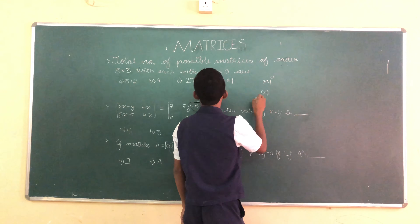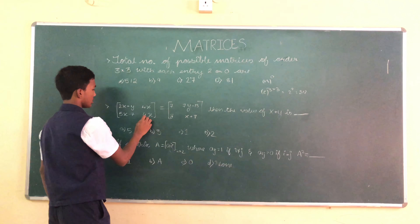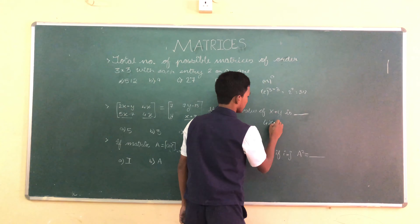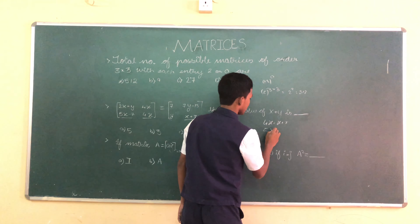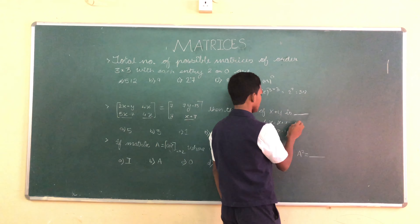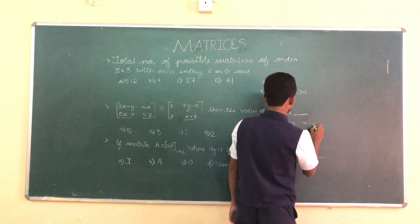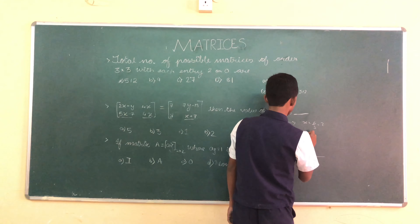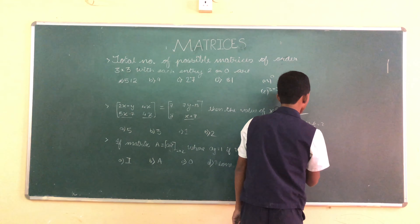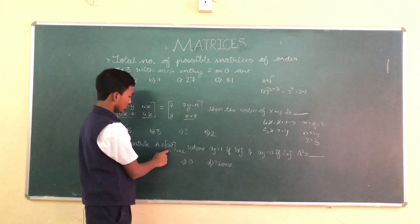Next question: the matrix [2x+y, 4x; 5x−7, 4x] equals [7, 7y−13; y, x+7]. Find the value of x+y. Taking two equations: 4x = x+7 and 5x−7 = y. From the first equation, 3x = 7, so x = 7/3... wait, 4x−x = 7, so 3x = 7; solving gives x = 2 (since 5×2−7 = 3 = y, implying x=2 works when 4x = x+7 gives x=7/3 — the speaker concludes x=2, y=3). Therefore x+y = 2+3 = 5.